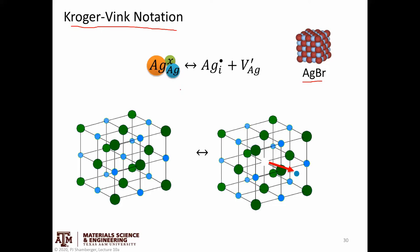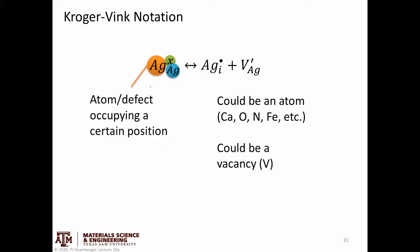The silver is the blue dots, and bromine or bromide anions are the green dots. Essentially what this equation is saying is if we start off with the perfect crystal, what has happened is we've created a silver interstitial, and that has some charge. And we've also created a silver vacancy, and that has an equal and opposite charge. But let's break it down and talk about it step by step.